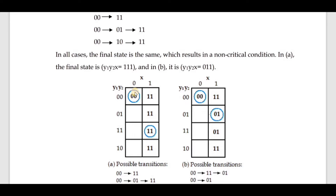Suppose x alone changes. Since x is changing from zero to one, the state goes to 11. That 11 is your unstable state.